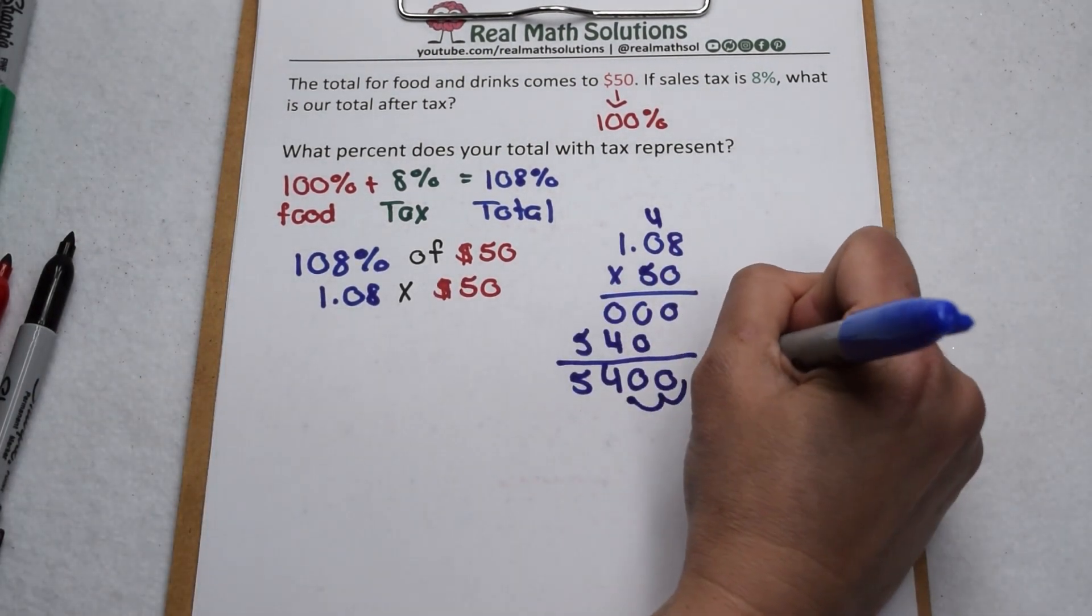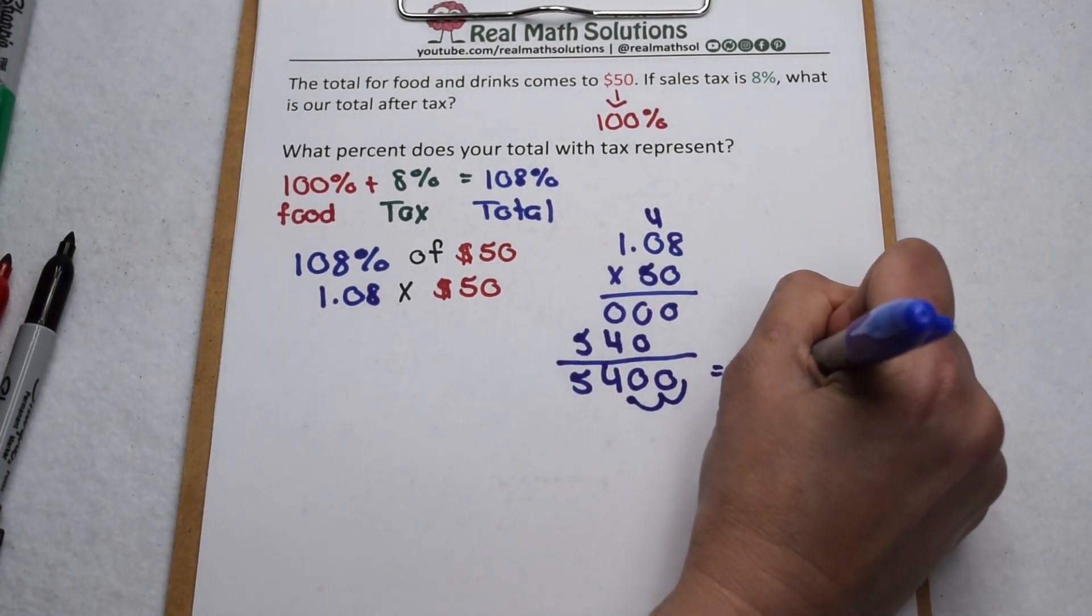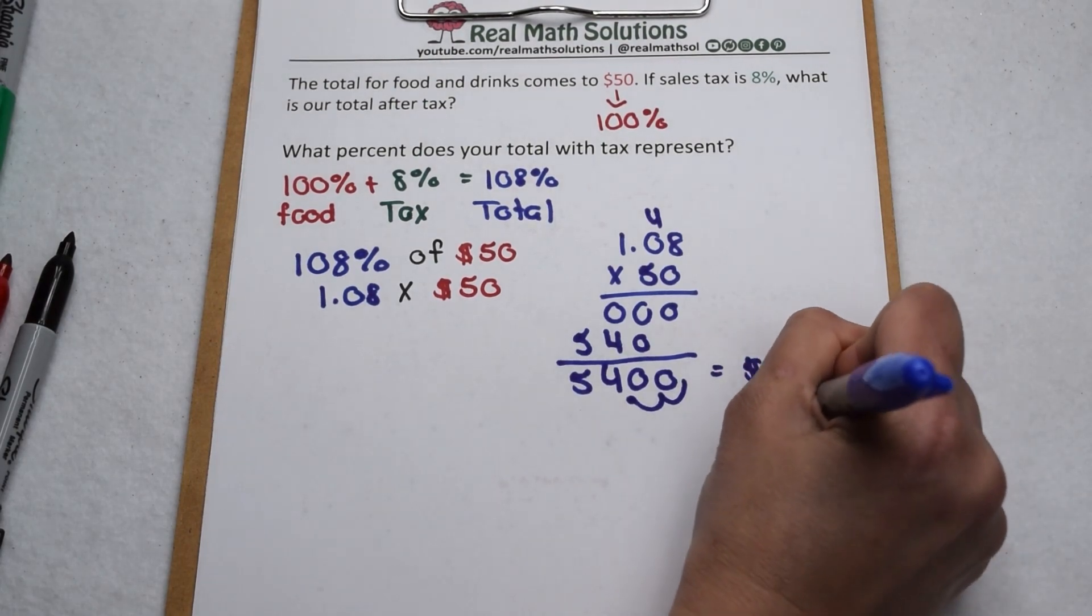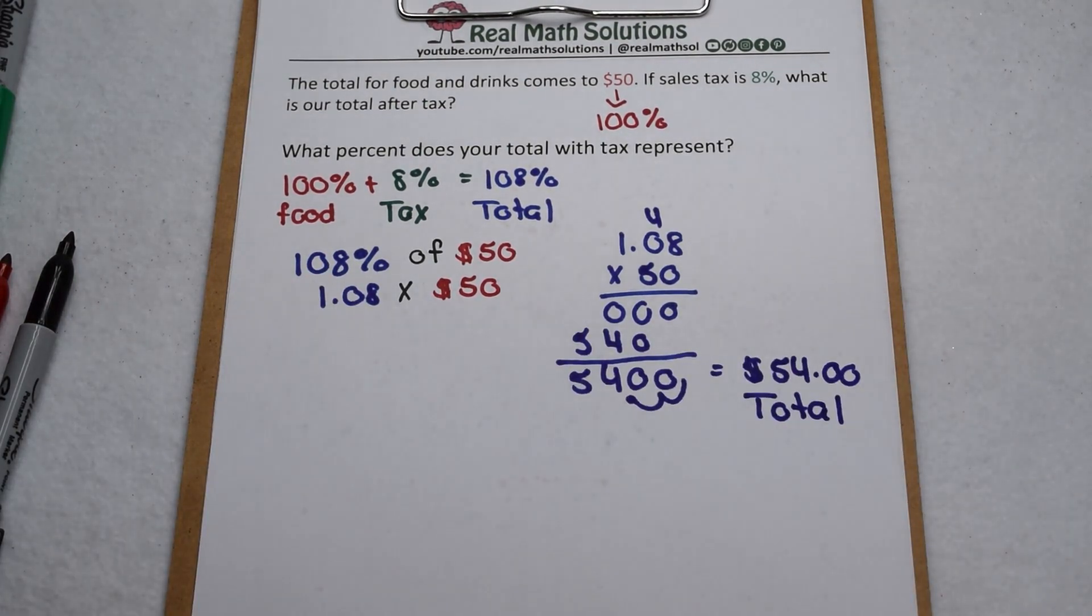And we can see, if we think in terms of percents, we can get to that $54 for our grand total through one multiplication problem. Either way, we're spending $54.